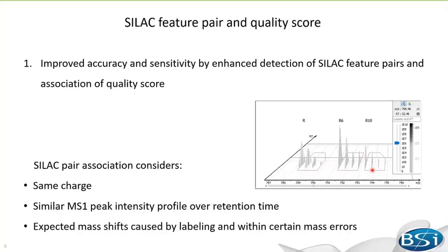These three individual features are associated as a SILAC pair based on: first, they are of the same charge, which we can tell from the isotopic distribution; secondly, whether these feature peaks share a similar MS-1 peak intensity profile over the retention time; and lastly, if they fall within expected mass shifts due to labeling and are within certain mass errors.